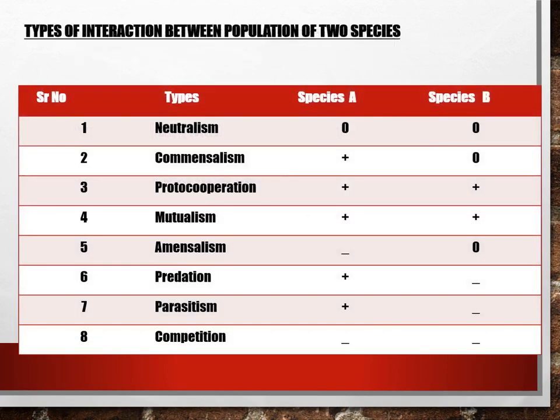Now we have got eight different types of associations and interactions. They are: neutralism, commensalism, proto-cooperation, mutualism, amensalism, predation, parasitism, and competition.